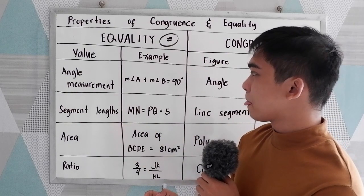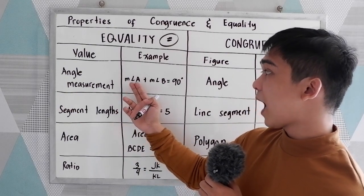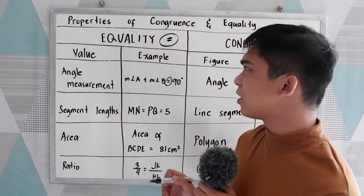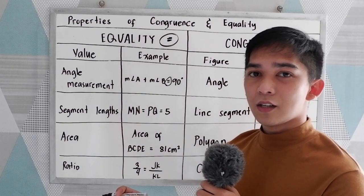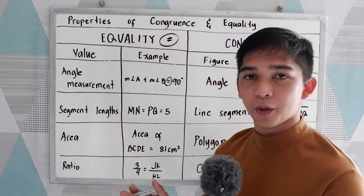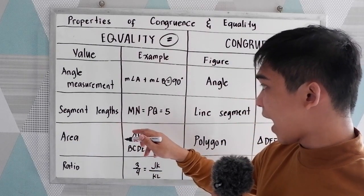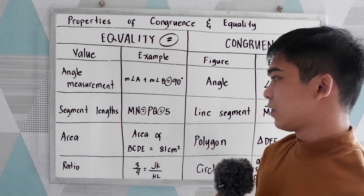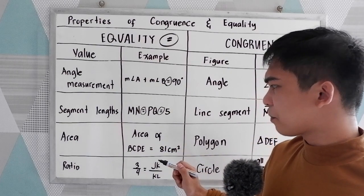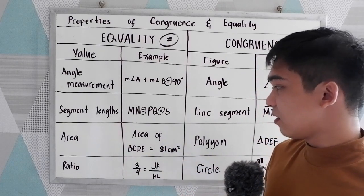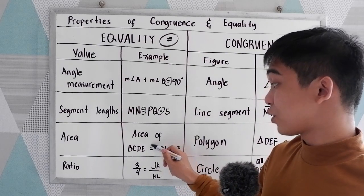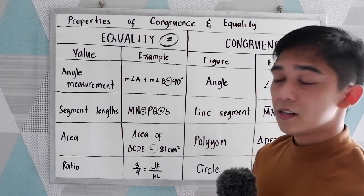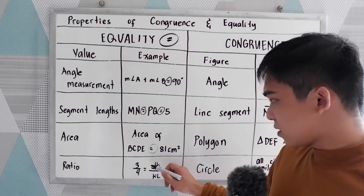For example, first is angle measurement: measure of angle A plus measure of angle B is equal to 90 degrees. In equality, we can use addition or multiplication. For segment length: MN is equal to PQ is equal to 5. For area: area of quadrilateral BCDE is equal to 81 cm squared. And for ratio: 3 to 4 is equal to JK over KM — this indicates our sides, so we use the equal sign.